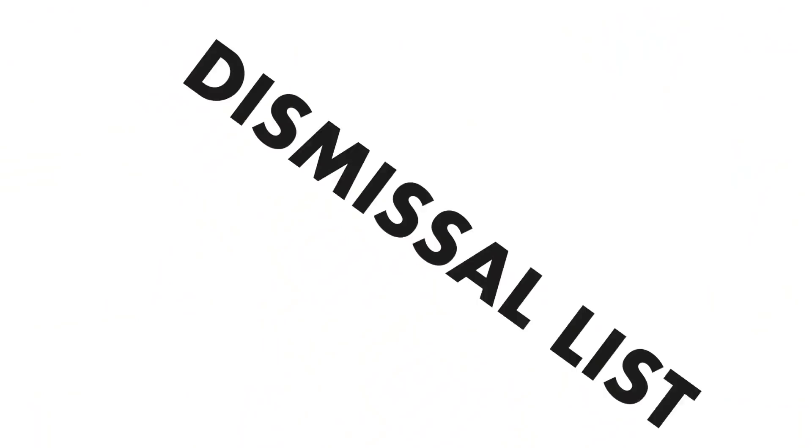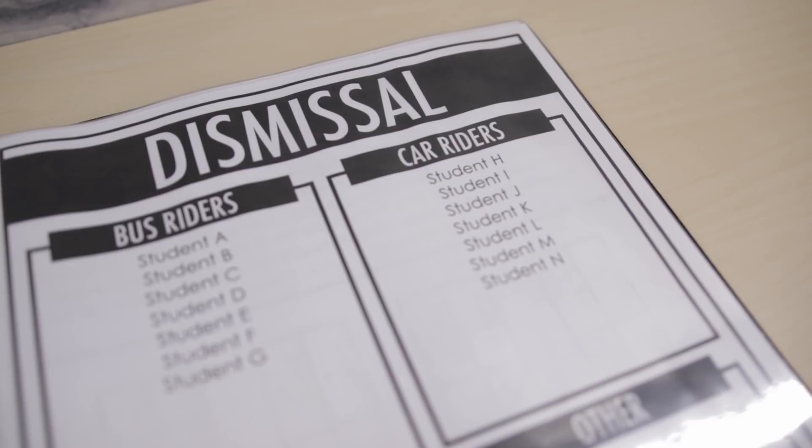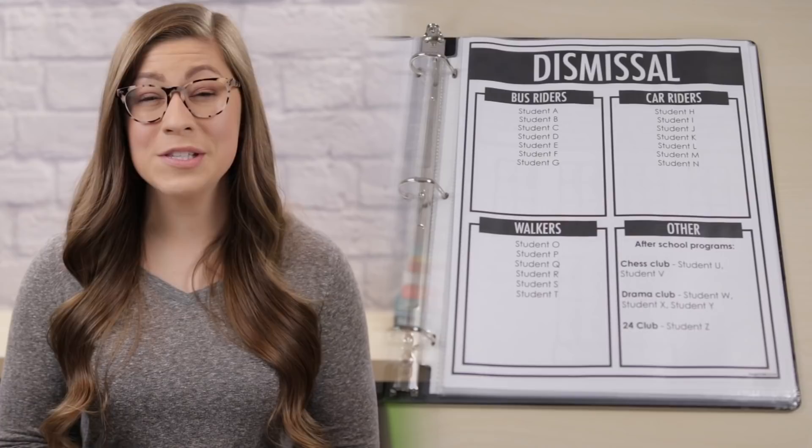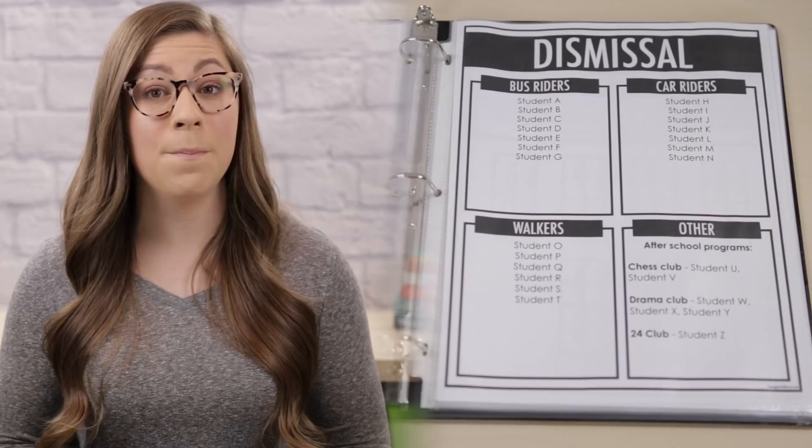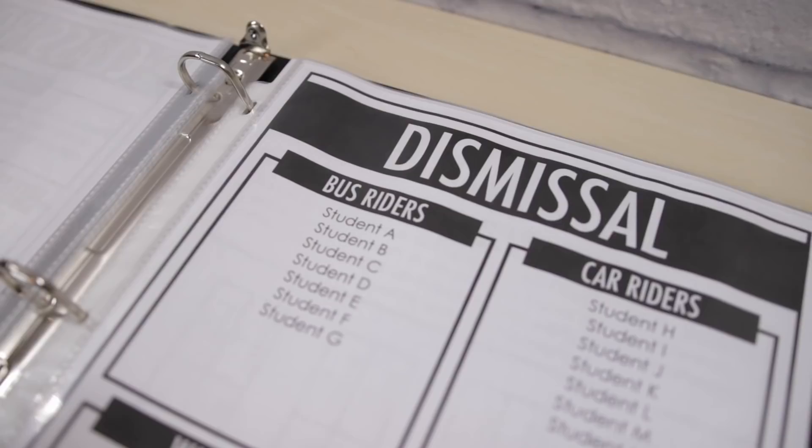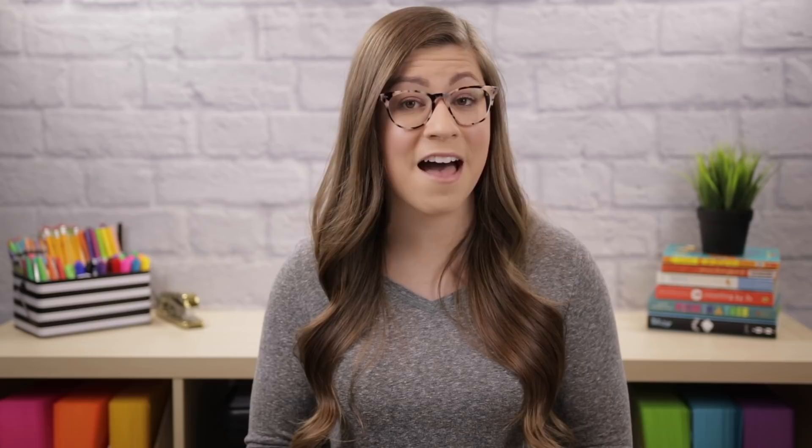The next page is a dismissal list, which I like to place right after the student roster so all student information is in one place. This is geared toward elementary school, so it may not apply to all grades. I list the mode of transportation for each student, including the specific bus number, and note if they have a different mode of transportation on certain days of the week. If you're responsible for taking a certain group out for dismissal — I take out walkers — you'd also want to include a list of all walkers from the entire grade level.